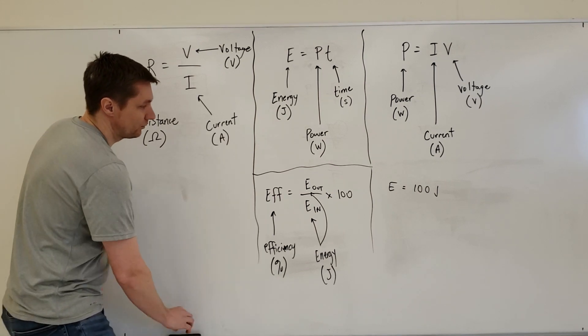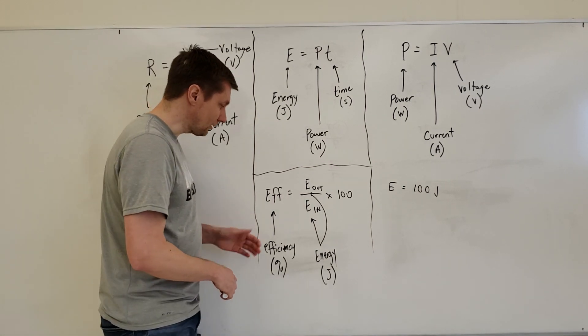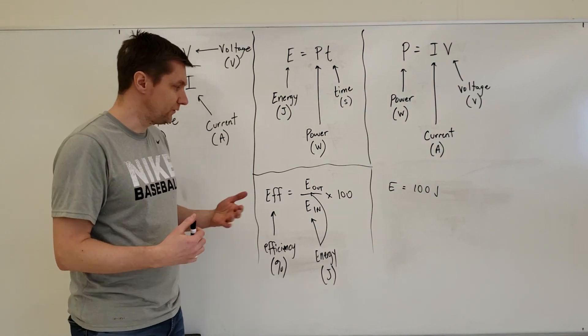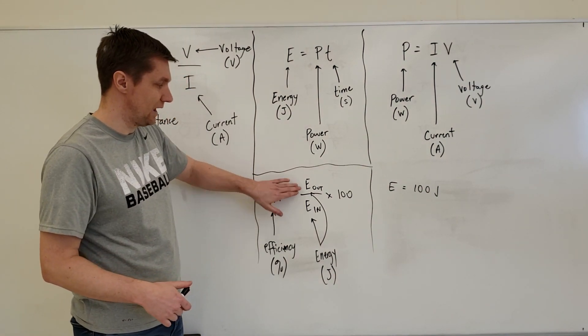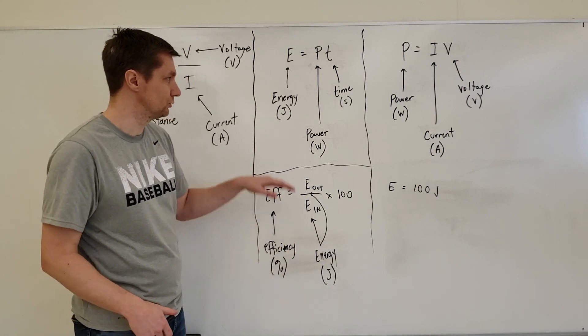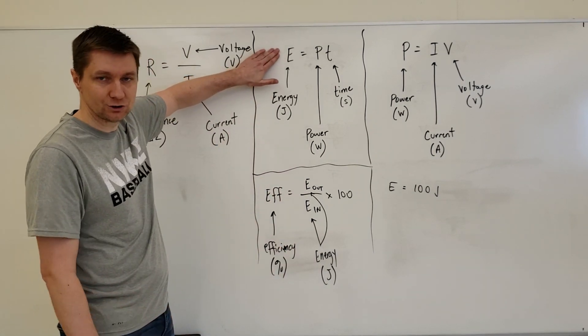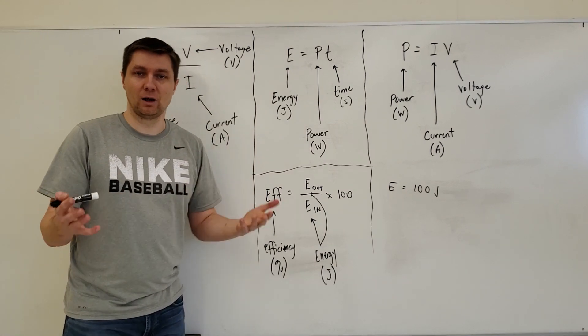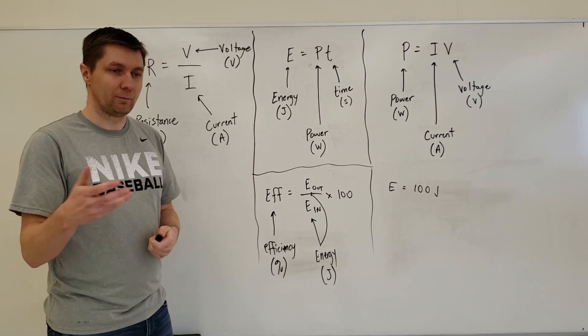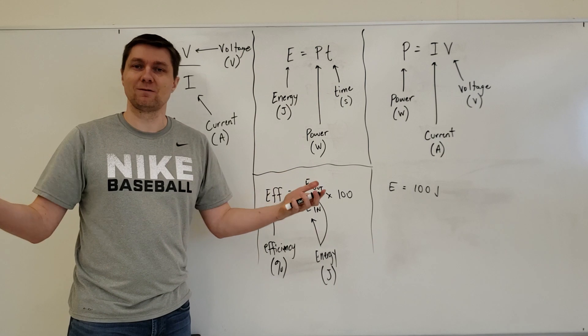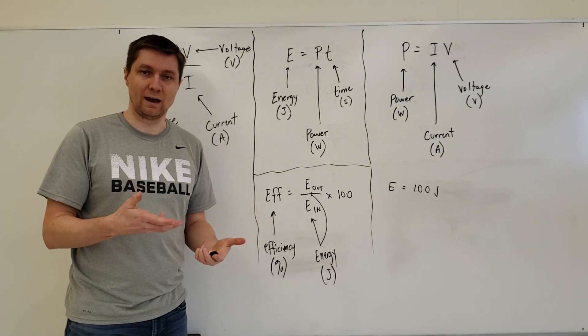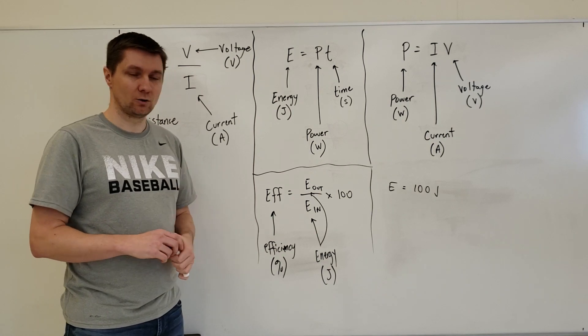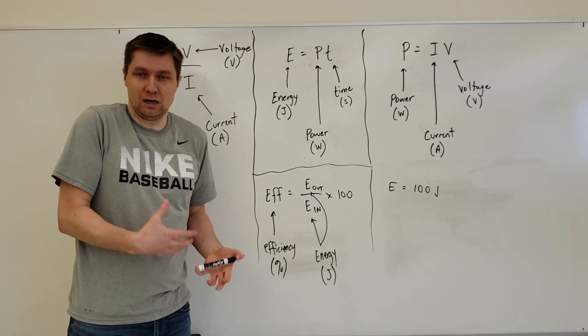This last formula calculates efficiency. Efficiency makes use of energy measured in joules, which we can calculate using the energy formula. For any appliance plugged into the wall, it will draw energy out of an electrical circuit and take that energy into itself.